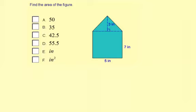The triangle height is 3 inches. The base of the triangle is going to be 5 inches because it's attached to this rectangle. So we need to find the area of the rectangle, area of the triangle, and add them together.